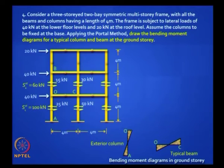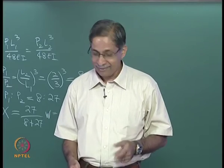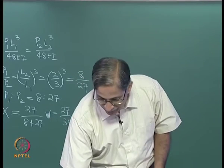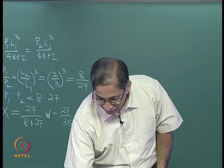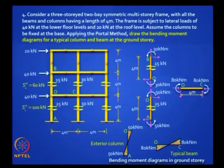The moment in the exterior column is 25 × 2 meters = 50 kilo Newton meter. In the beam, you have to also look at the story column above — some of you forgot that you need to add the contribution from the 30 kilo Newton shear. It is not the entire 50 that goes to the beam: 50 + 30 adds up to 80. Some of you wrote 50 — that is the mistake. These are your correct answers.